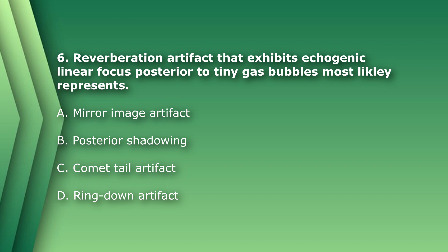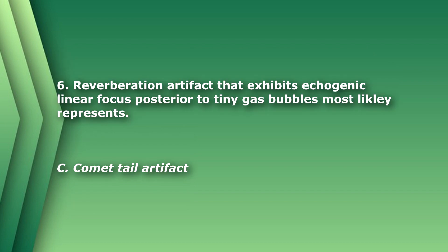Question 6: A reverberation artifact that exhibits echogenic linear foci posterior to tiny gas bubbles most likely represents: A) mirror image artifact, B) posterior shadowing, C) comet tail artifact, or D) ring down artifact. The answer is C) comet tail artifact.